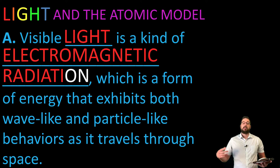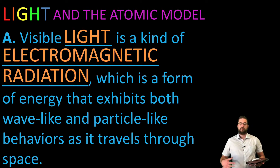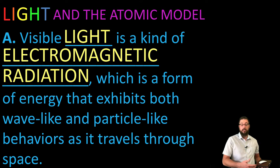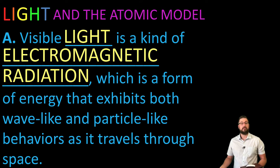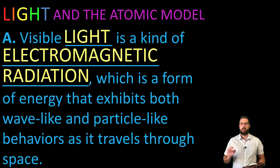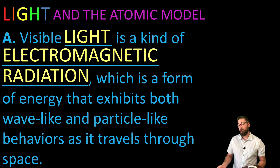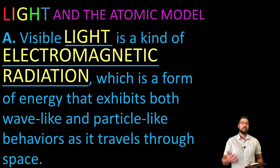Visible light is a kind of electromagnetic radiation. It's a form of energy that exhibits both wave-like and particle-like behavior as it travels through space. This is that wave-particle duality — electrons exist like particles but also like waves, and light also exists as both a particle and a wave.